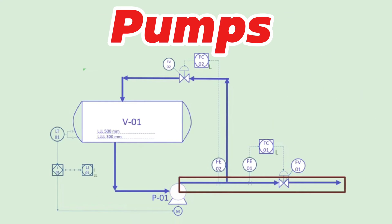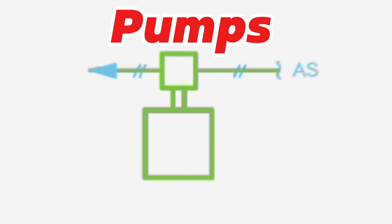Pumps are used to move liquid through a plumbing system. Pumps are often used to move liquid vertically using an energy input. There are various types as follows.